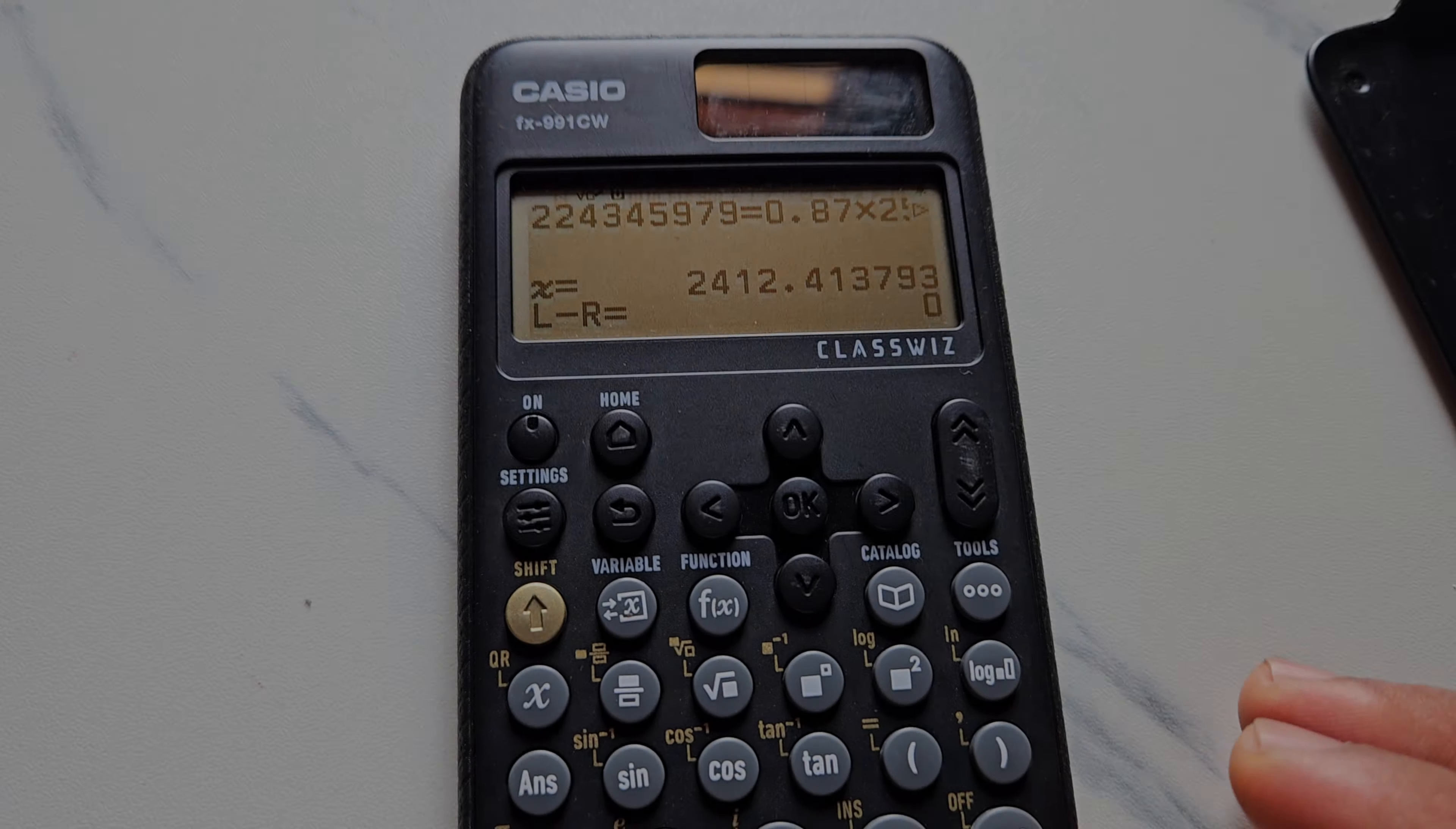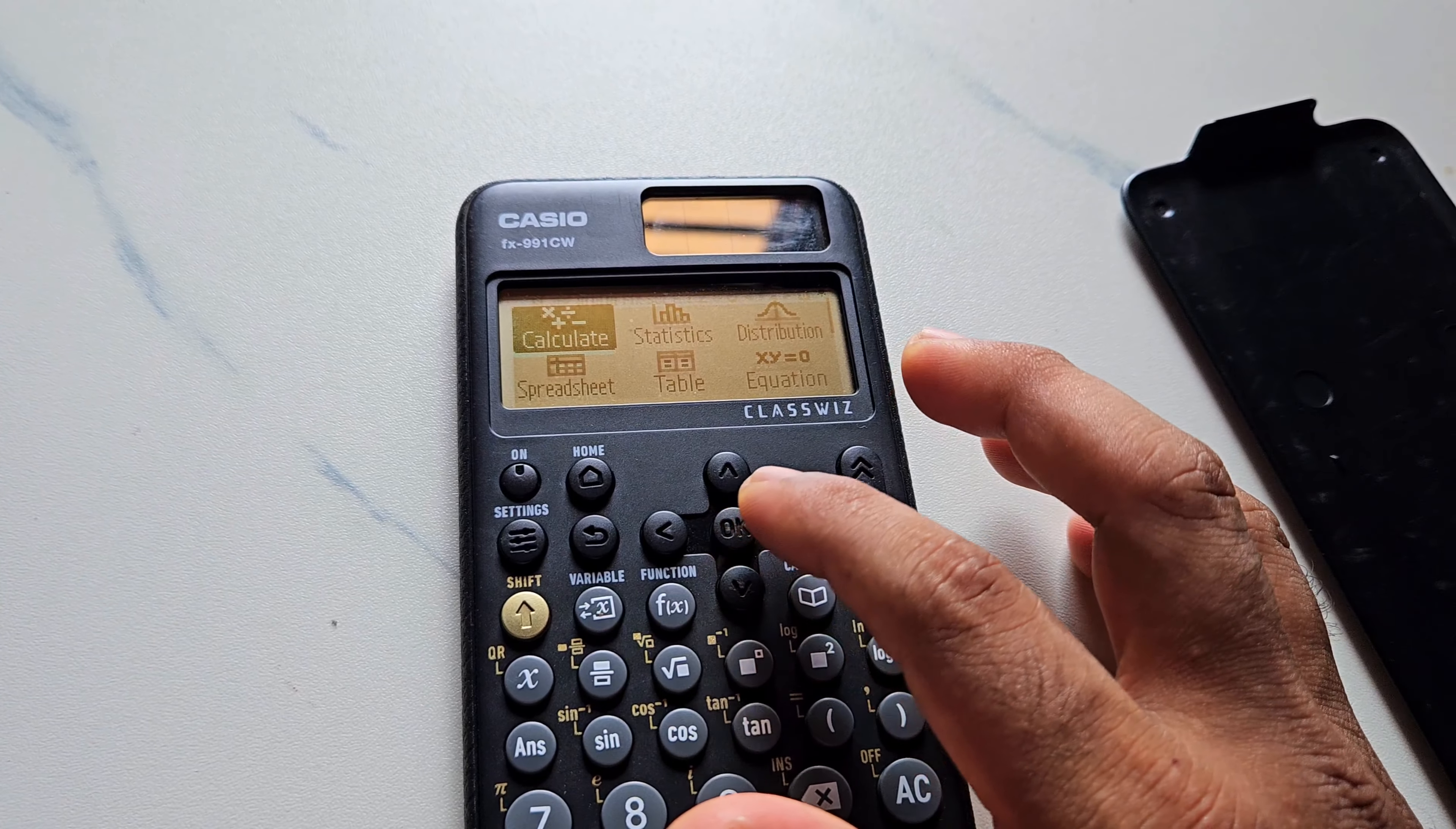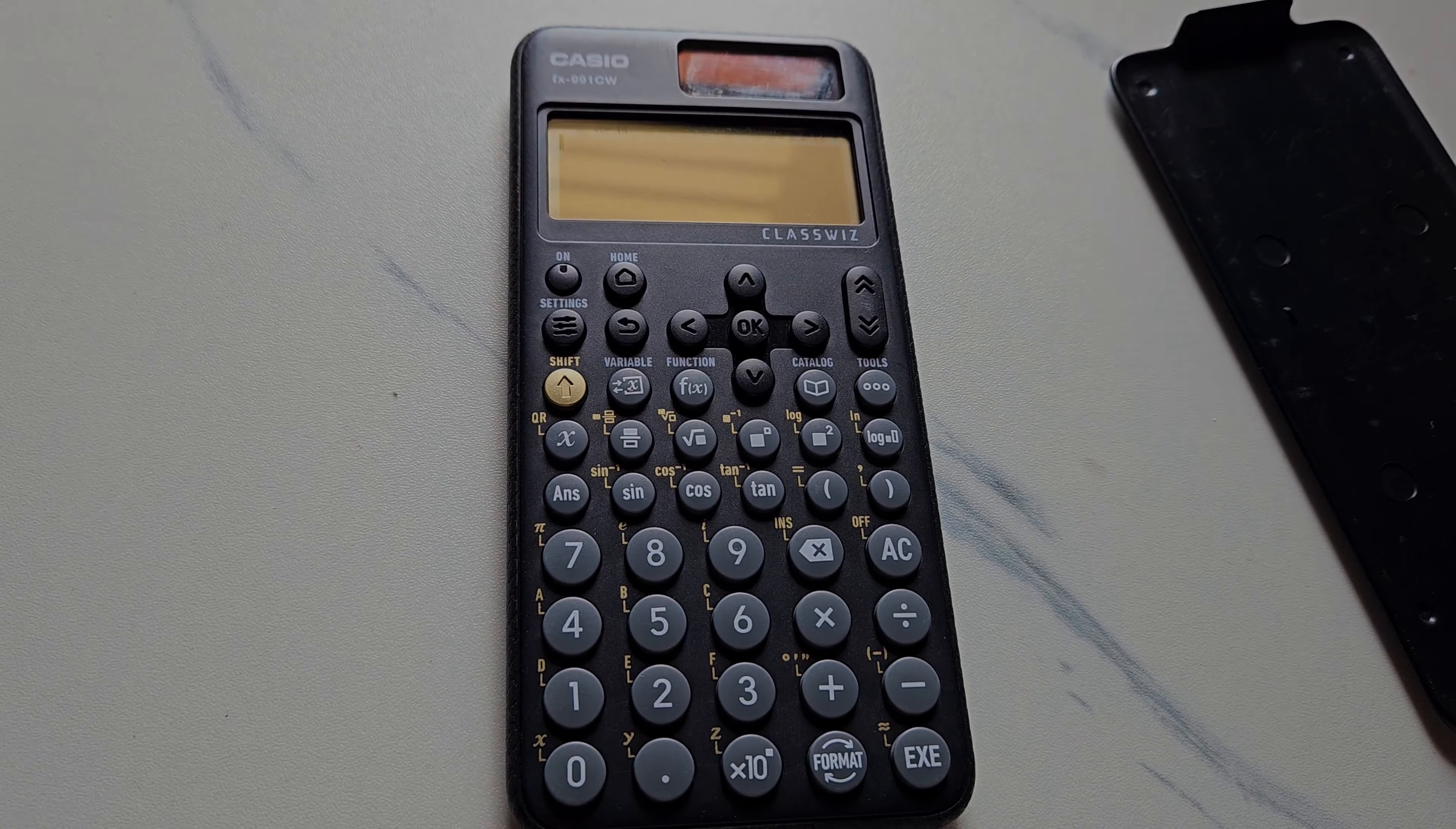If you want to go out of this function, just click on home button and again you find all these options. Select whatever you like. If you want to go to calculate, that is simple mathematical calculations, then move to calculate and press OK. You can see how simple it is to solve equations in this Casio FX 991 CW. For more videos like this, stay tuned to the channel. If you are new, please subscribe. Thanks for watching.